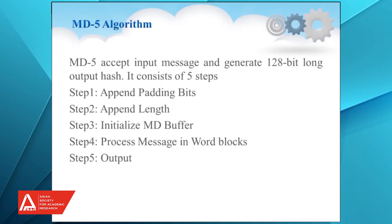Coming to the MD5 steps. Step 1 is appending of padding bits — padding is done such that the length is an even multiple of 512-bit. Step 2 is append length — the total length will be length mod 2^64. Step 3 is initializing of the MD buffer, defining a buffer of 512-bit blocks. Step 4 is processing the message in word blocks, defining four chaining variables each of 32-bits. Step 5 — the processed block produces a 128-bit long hash as output.